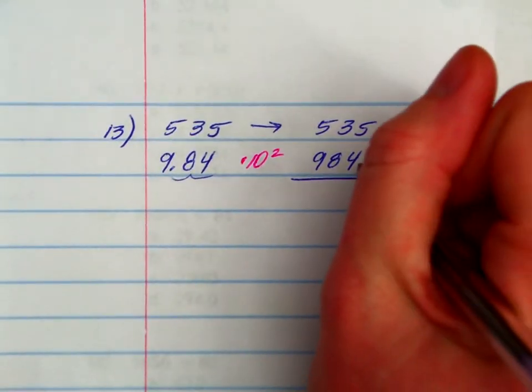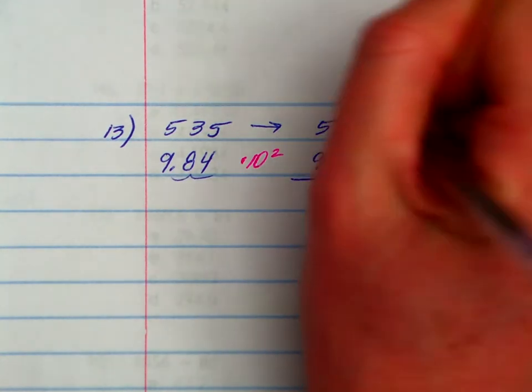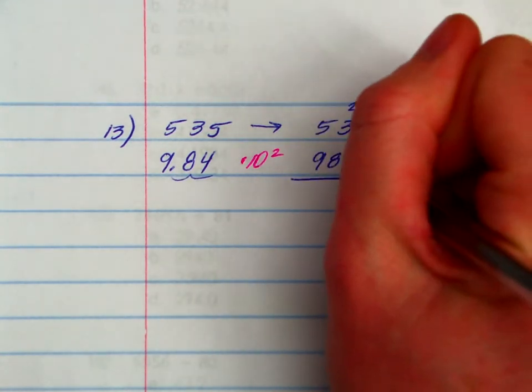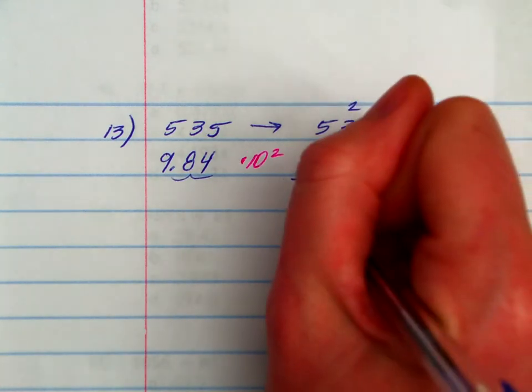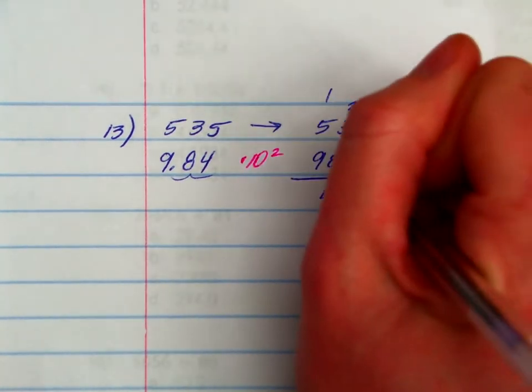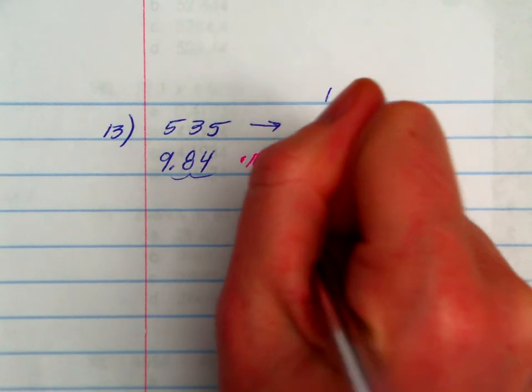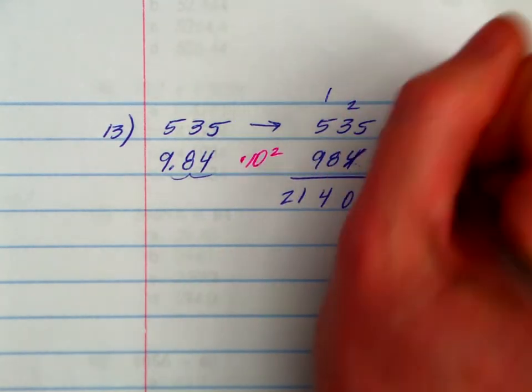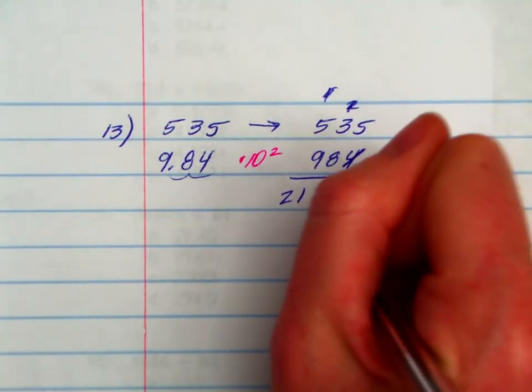Now I'm going to multiply these two whole numbers, starting with the partial product of the ones place. 4 times 5 is 20. Put down your 0, carry it 2. 4 times 3 is 12, plus 2 is 14. 5 and 4 make 20, 21. Done with the 4. Cross out the carryovers.